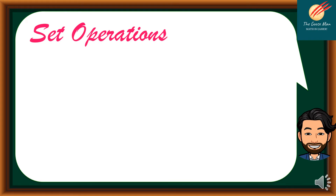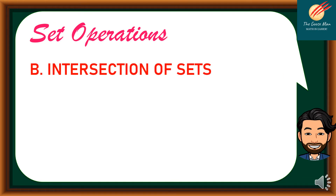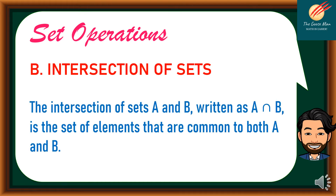Let's move on to the second set operation, which is intersection of sets. The intersection of sets A and B, written as A intersection B, is the set of elements that are common to both A and B. The important word here is 'common.'